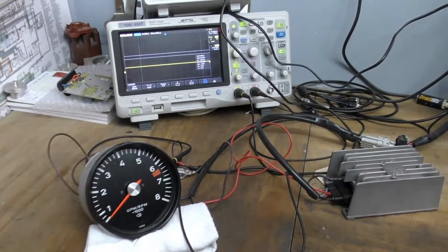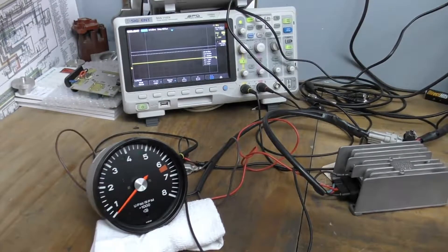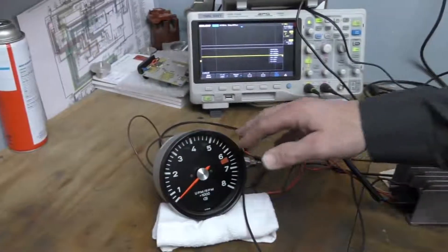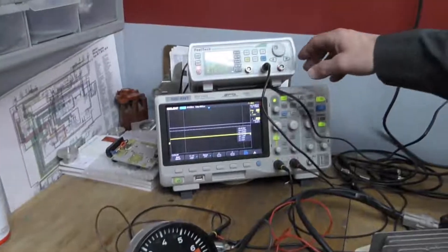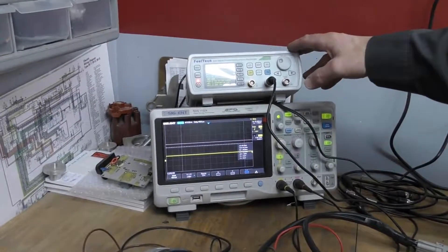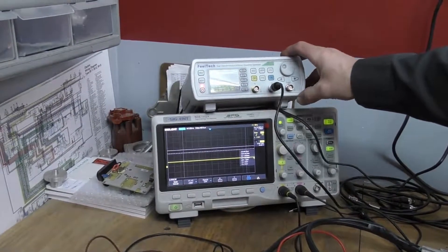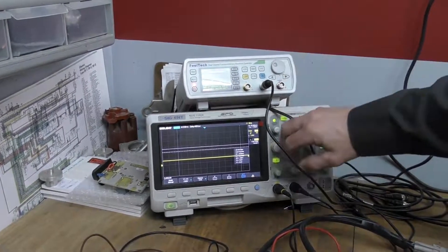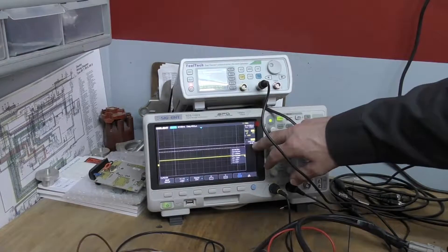I want to go through and show you the test setup that we have for testing CDI boxes and tachometers. What I'm using here is my wave generator. This is what I'm using to generate a signal, the same as what would be coming out of your ignition distributor. I have my oscilloscope so I can look and see what the waveform looks like.